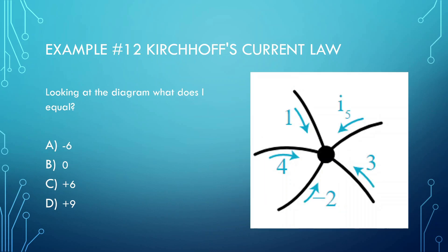Alright, let's look at this next diagram — what does I equal? We want to look at what this is equal to. What we know is we have 1, 4, and 3 going in, and we have negative 2 going in. So what we can do is change this negative 2 to be a positive 2, but then we change the arrow to go the other way. The negative just means it's going the opposite way of what it looks. So we have 1, 5, 8 going in, and then we have 2 going out.